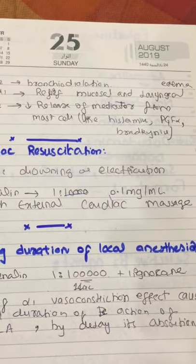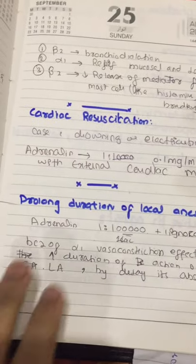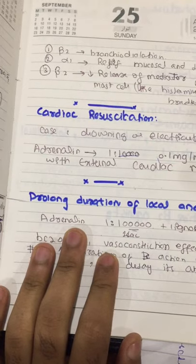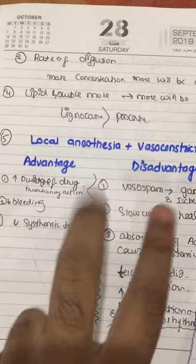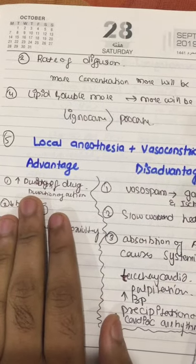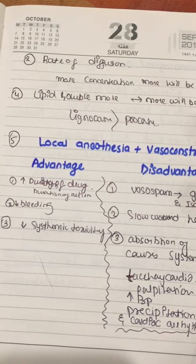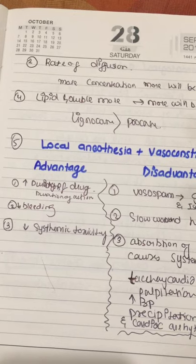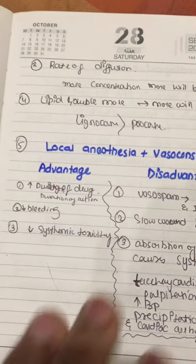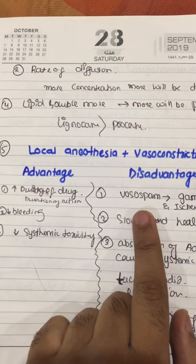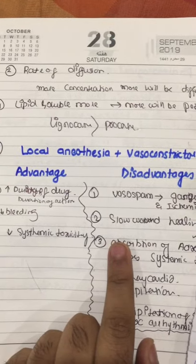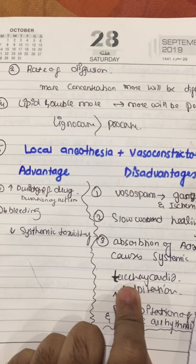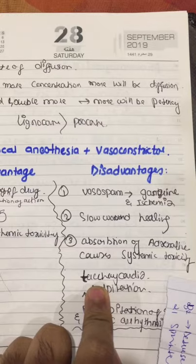D — increasing the duration of action of local anesthetics. When adrenaline, a vasoconstrictor, is combined with a local anesthetic, there are advantages and disadvantages. Advantages: it increases the duration of action, reduces bleeding, and reduces systemic toxicity of the local anesthetic. Disadvantages: it can cause vasospasm, probability of gangrene, reduced wound healing, and systemic toxicity due to adrenaline itself.